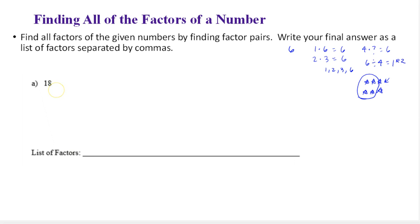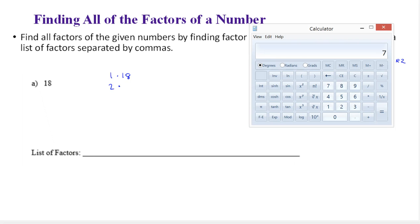So what we're going to do to find all the factors is we want to have a systematic process. We are going to make a list and see which numbers are factors of 18 and which are not. The first one you always want to start with is one times the number, one times 18. So one and the number itself are always factors of the number.